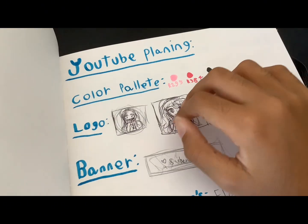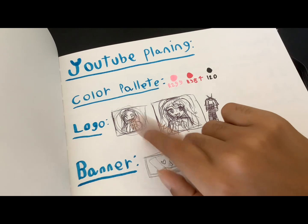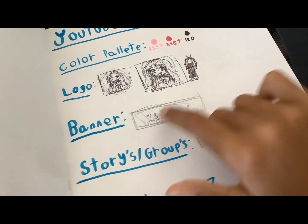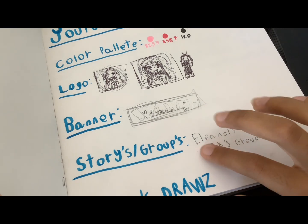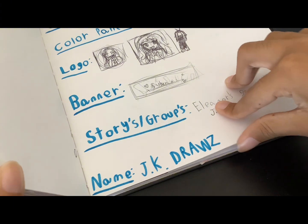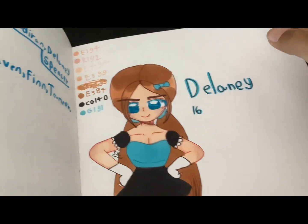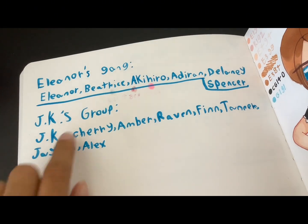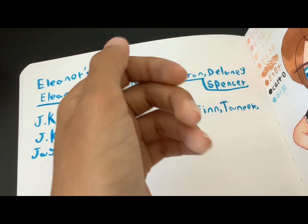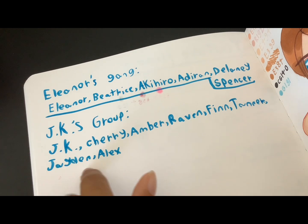This is when I was planning my YouTube channel a bit. This was gonna be my color palette, my logo — though I did something completely different — and my banner that I'm gonna change soon. My stories and groups include 'Eleanor's Gang' and 'JK's Group.' I've been developing Eleanor's story a lot. I was also gonna change my name to JK Draws, but I'm still debating. Eleanor's gang includes Eleanor, Beatrice, Akira, Adrienne, Delaney, and Spencer — my newest OC. JK's group is gonna be me, JK, Cherry, Amber, Raven, Finn, Tanner, Jaden, and Alex — though I might remove some characters.